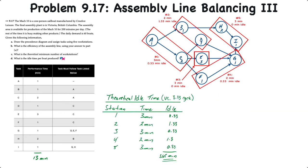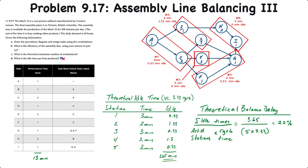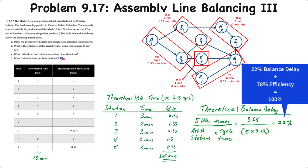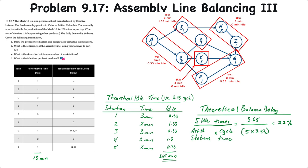To determine the balance delay or idle time as a percentage, we compare each actual station time to the calculated cycle time of 3.33 minutes. Station 1 has a station time of 3 minutes, so 0.33 minutes are idle. Station 2 has 2 minutes with 1.33 minutes idle. Station 3 is the same as station 1 at 0.33 minutes idle. Station 4 has 1.33 minutes idle, and station 5 has 0.33 minutes idle. These add up to 3.65 minutes total. The balance delay is 3.65 divided by five workstations times 3.33 minutes, giving about 22%. Adding 22% to the 78% theoretical efficiency equals 100%, confirming 22% is the theoretical balance delay.